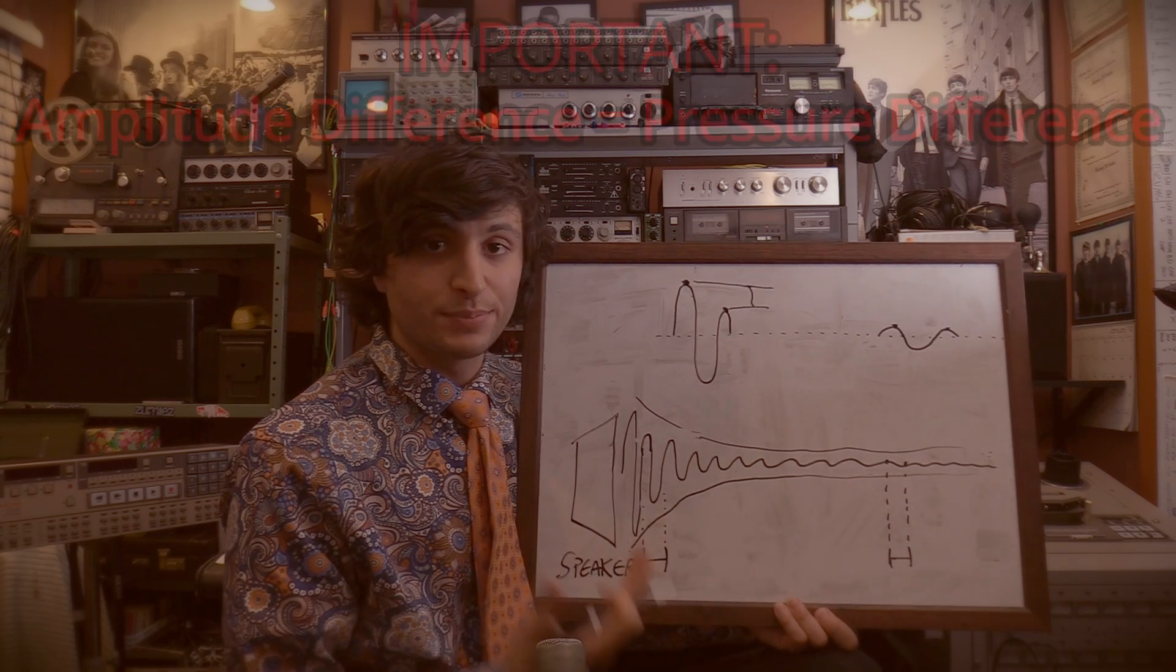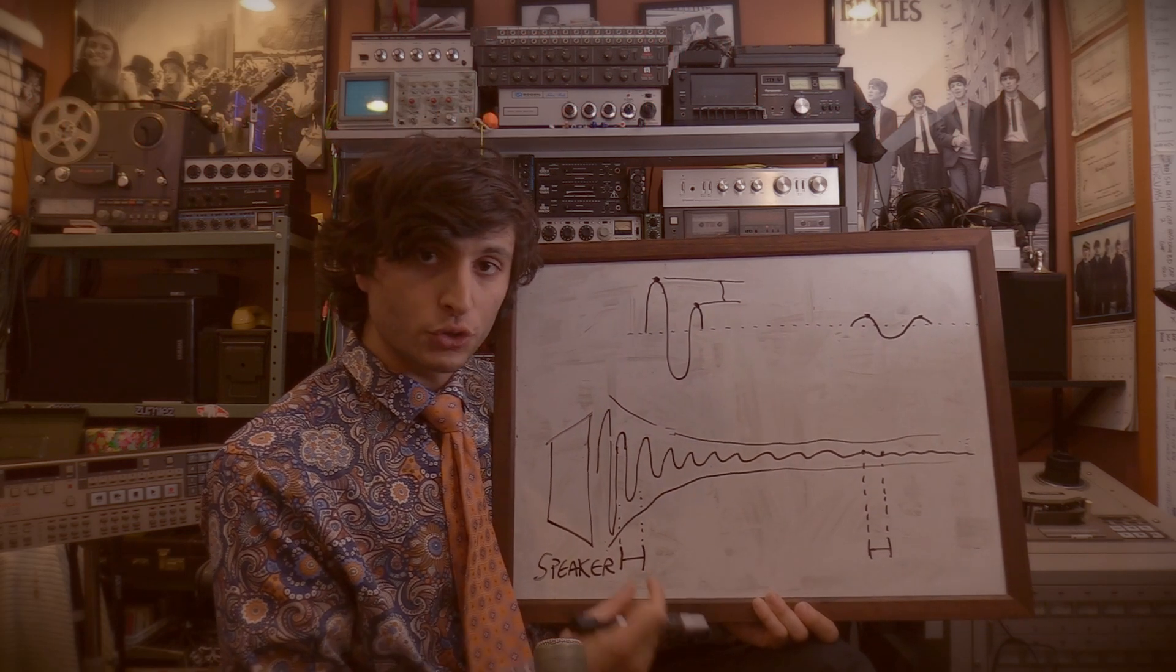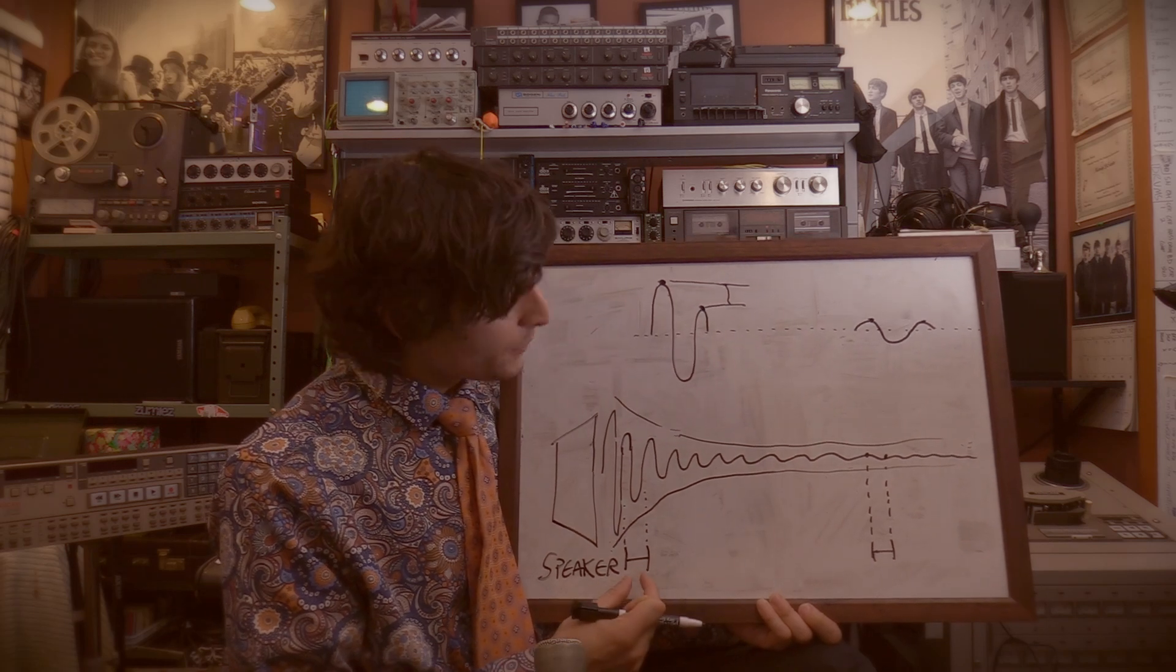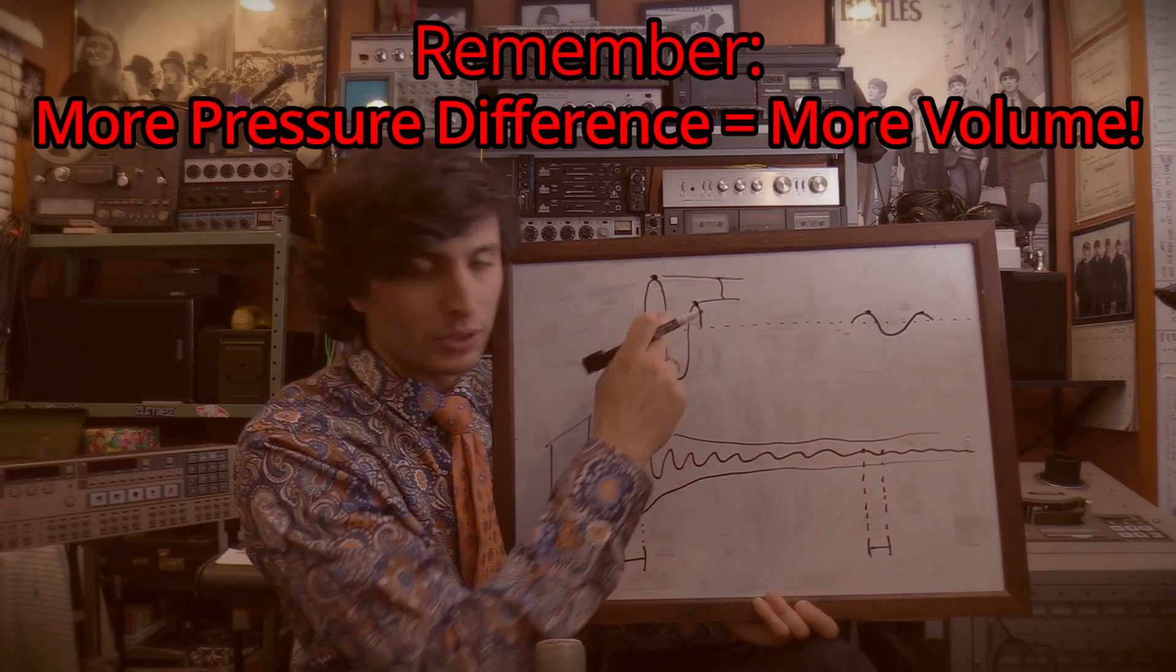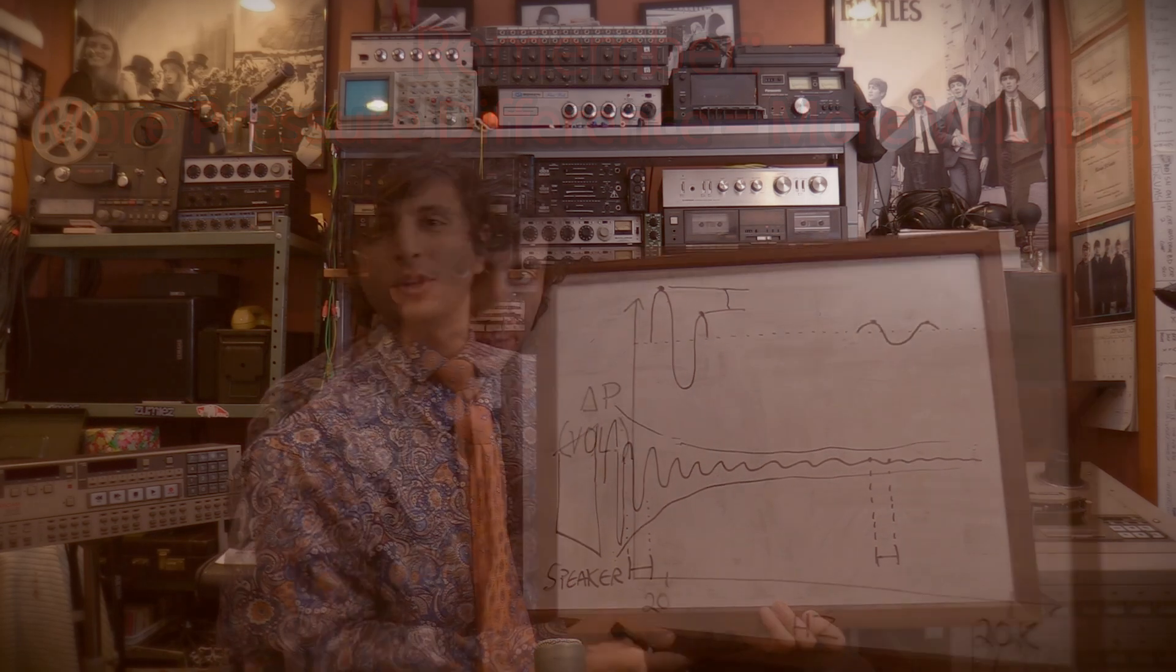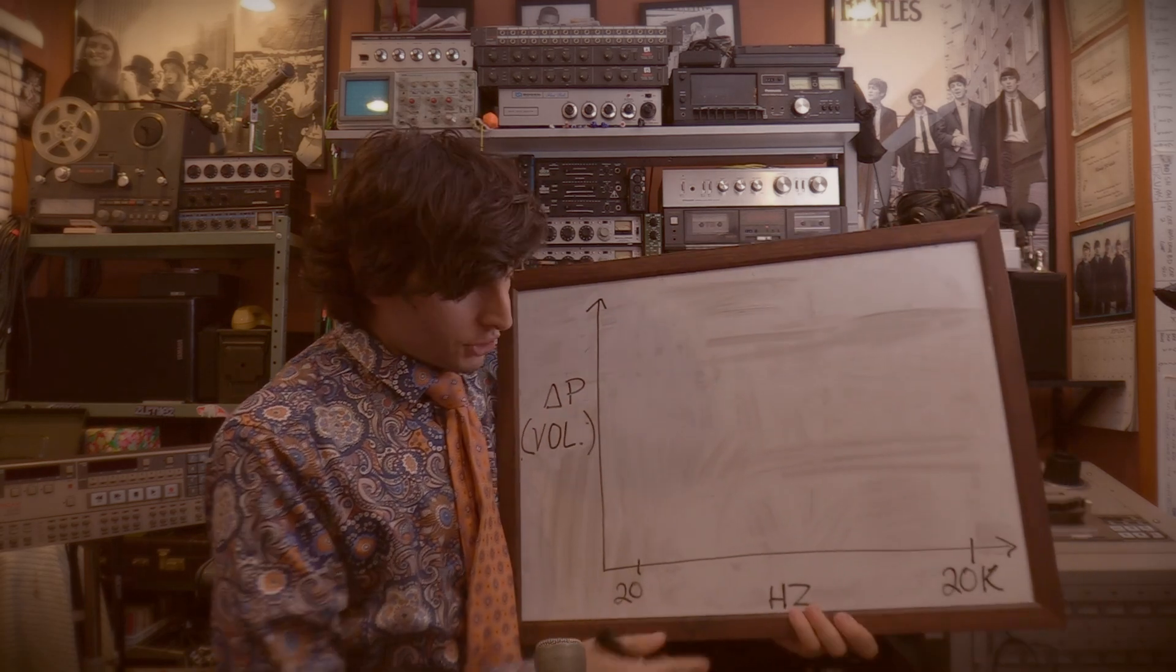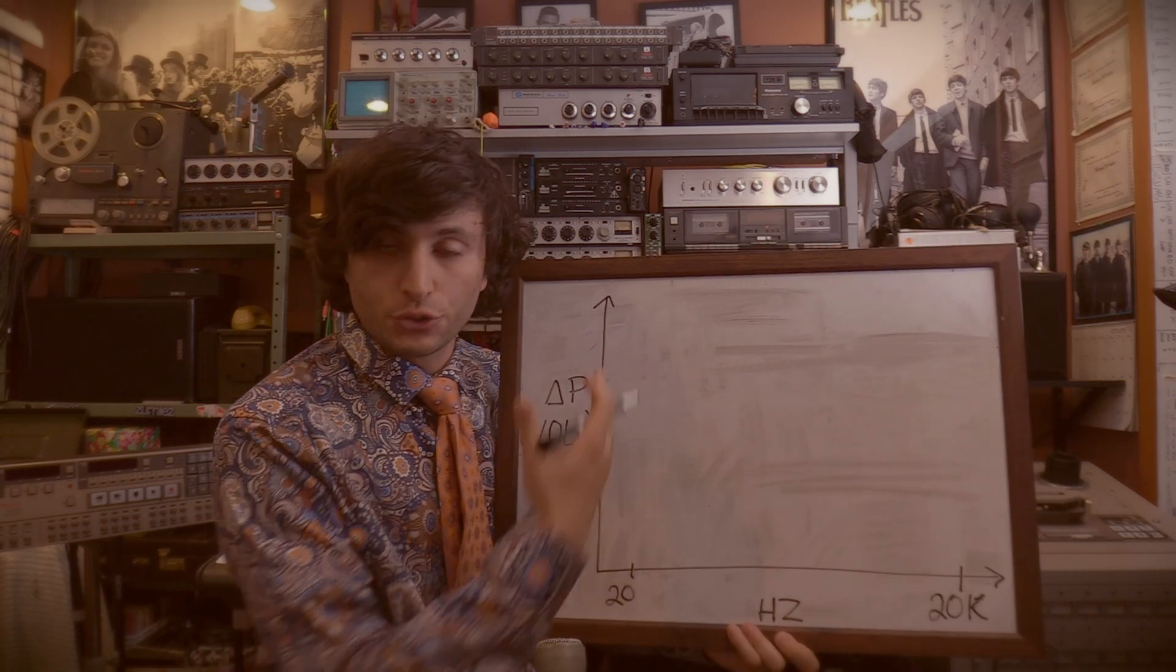To summarize, because of the inverse square law, for distances close to the signal source, there is a much bigger difference in amplitude as compared to distances farther away from the signal source.